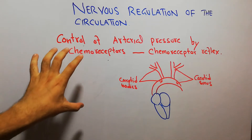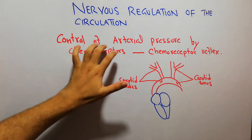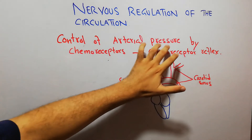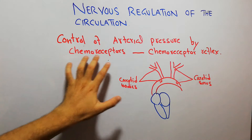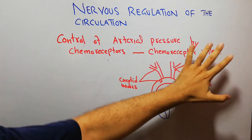In this lecture, we are going to discuss the control of arterial pressure by the chemoreceptor reflex.